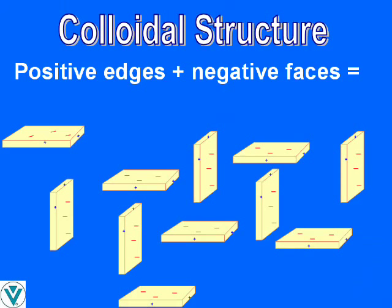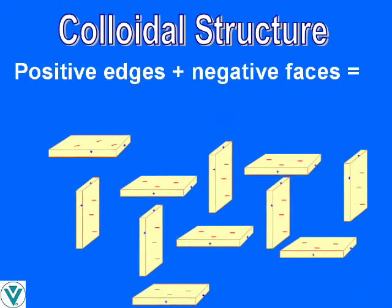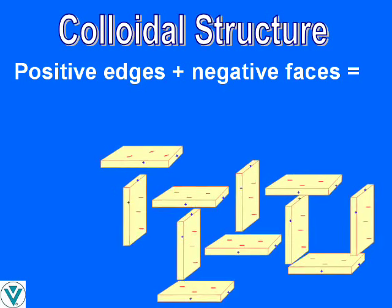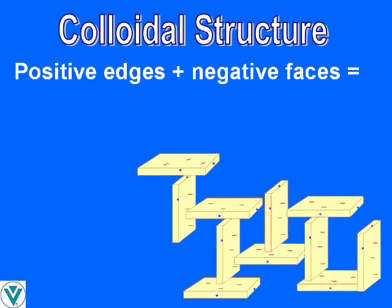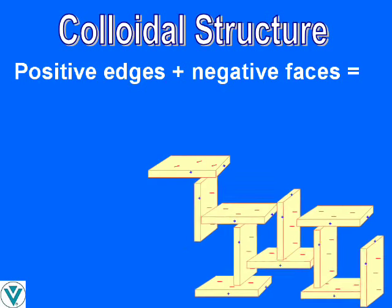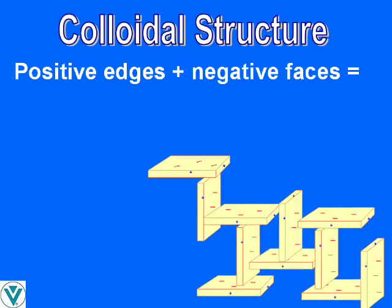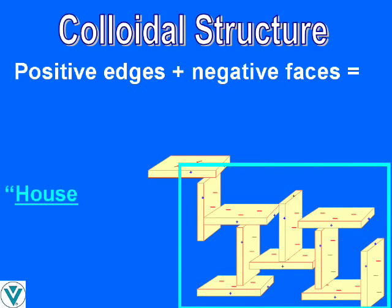Once the smectite is hydrated — that is, the platelets are separated — the weakly positive platelet edges are attracted to the negatively charged platelet faces. A three-dimensional colloidal structure forms, commonly called the house of cards.